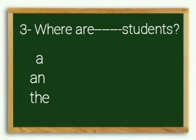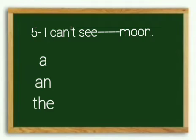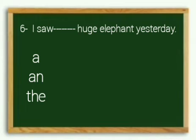Number three: Where are students? What is the correct answer? The. Where are the students? Number four: She is actress. What is the correct answer? She is an actress. Good job. Number five: I can see moon. What is the correct answer? I can see the moon. Well done. Number six: I saw huge elephant yesterday. What is the correct answer? I saw a huge elephant yesterday.